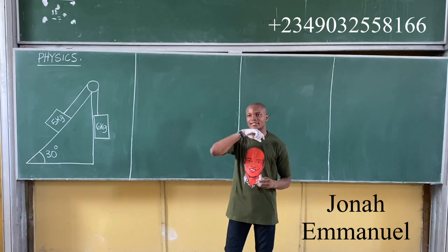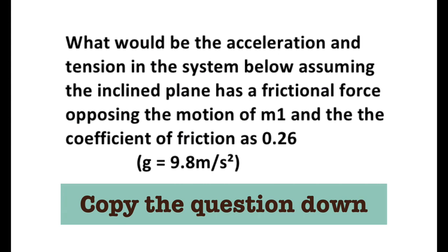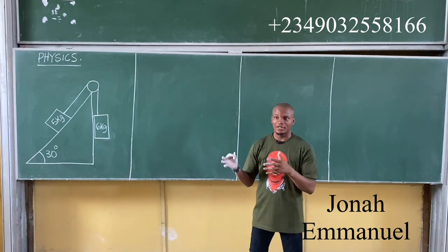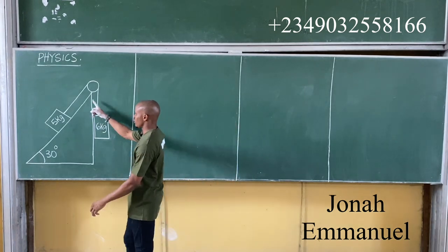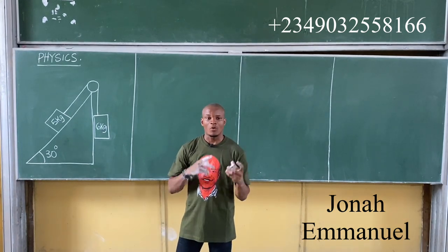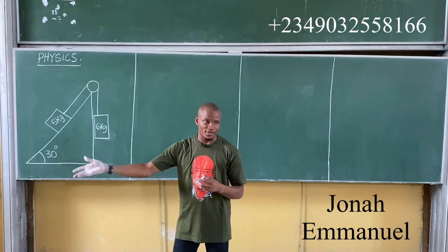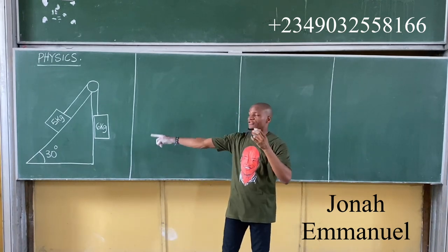In this video, we have another example of the friction problem. In this question, we find the acceleration and tension on the string for this system, assuming that the inclined plane has a frictional force opposite the motion. They say take the coefficient of friction as 0.26. We did this one yesterday and we didn't include frictional force. Now let's include frictional force here.